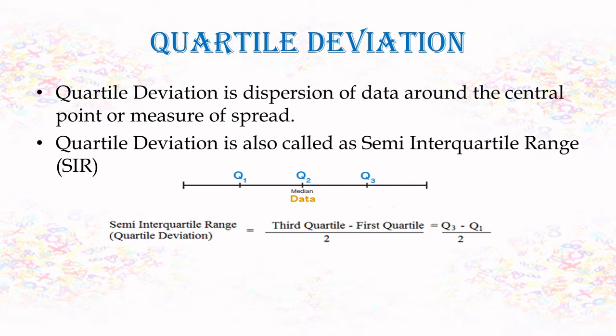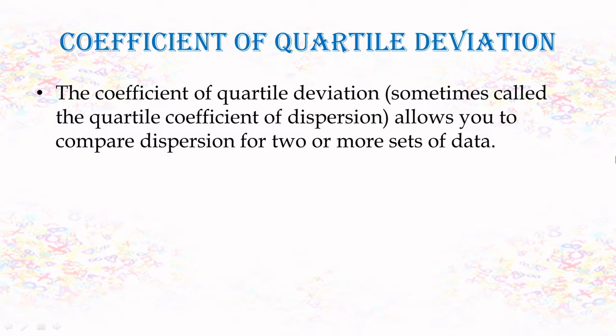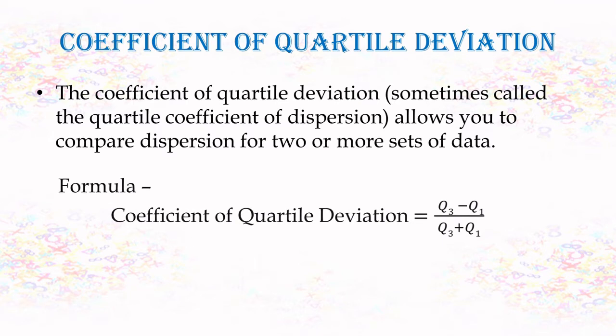Q1 and Q3 are the first and third quartile values. After finding the quartile deviation, we can also find the coefficient of quartile deviation, which allows you to compare the dispersion for two or more sets of data. The formula is Q3 minus Q1 divided by Q3 plus Q1, using the same Q1 and Q3 values.